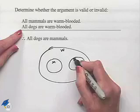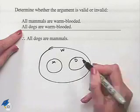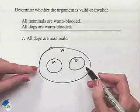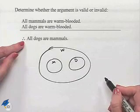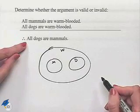...decide to draw a circle which is disjoint for dogs. This would fulfill the two premises, and yet when we look at our conclusion, can we now say all dogs...